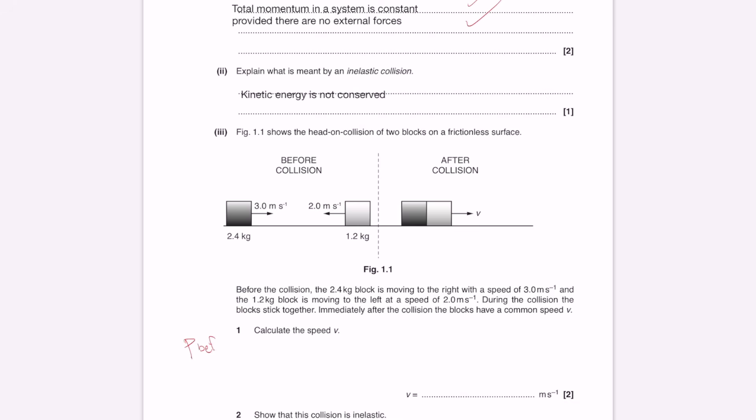So the total momentum before has to be equal to the total momentum afterwards. The total momentum before will be given by this mass multiplied by this speed, 2.4 multiplied by 3. But the other one is moving in the opposite direction, so we're going to do minus 1.2 multiplied by 2.0 meters per second. Afterwards, they stick together, so they're going to have a common mass of 2.4 plus 1.2 multiplied by V. Rearranging for V, we get 2.4 times 3, take away 1.2 times 2, divide that by 3.6, giving us around 1.3 meters per second.